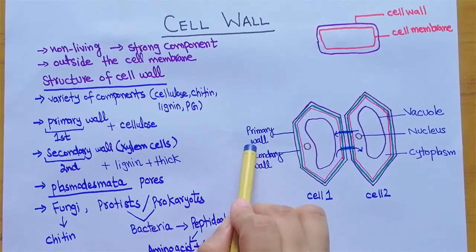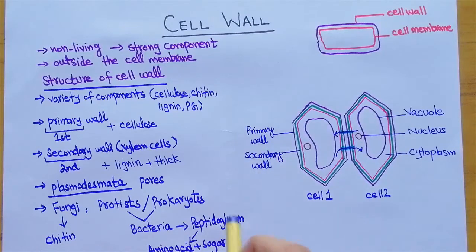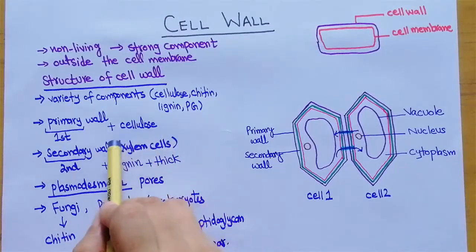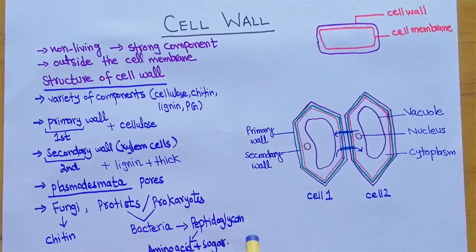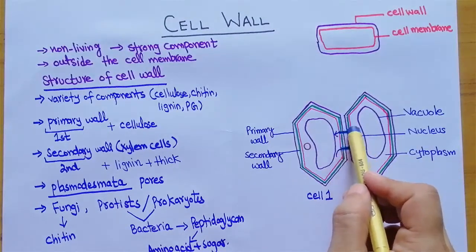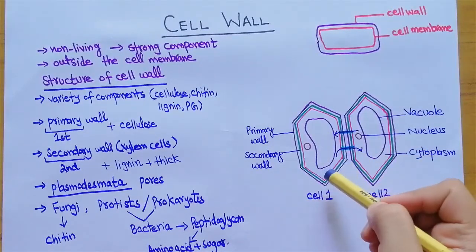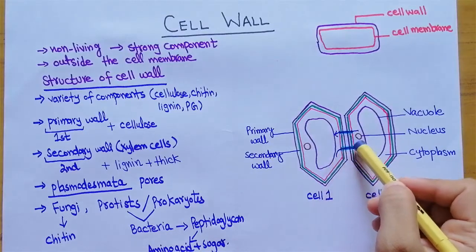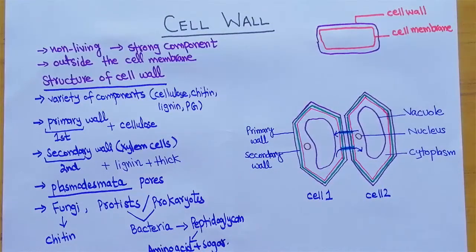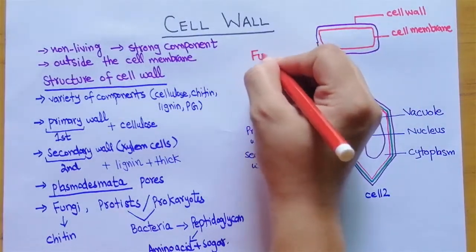To summarize the structure of cell wall: the cell wall of plants contains a primary wall, which is the outer layer, and a secondary wall, which is the second layer present in some special cells such as xylem cells. The secondary wall is a thick layer made up of lignin, while the primary wall is made up of cellulose. To connect one cell to another, plasmodesmata are present — these are pores inside the cell wall that allow cytoplasmic material to flow from one cell into another.